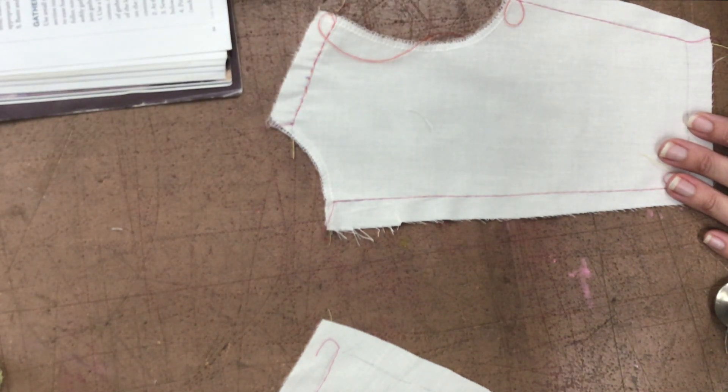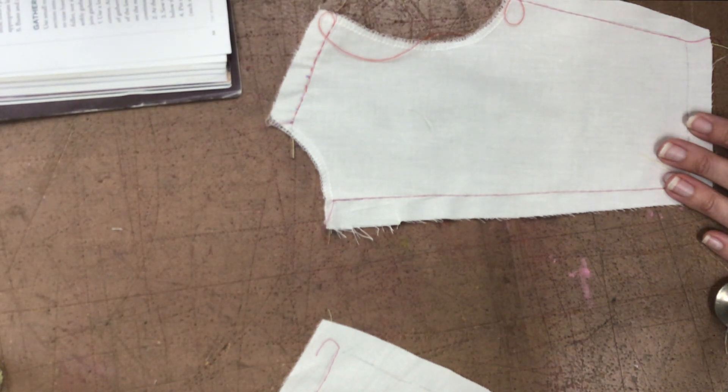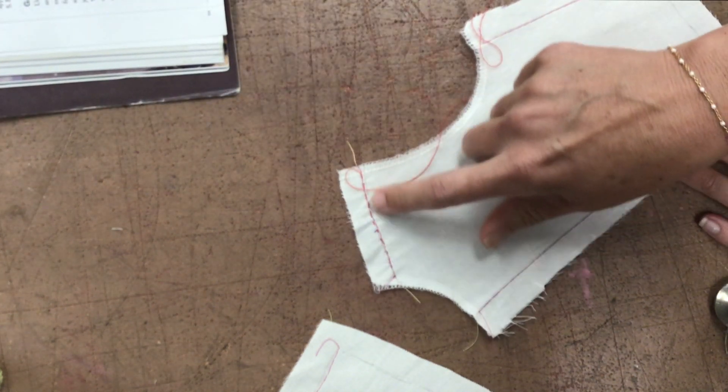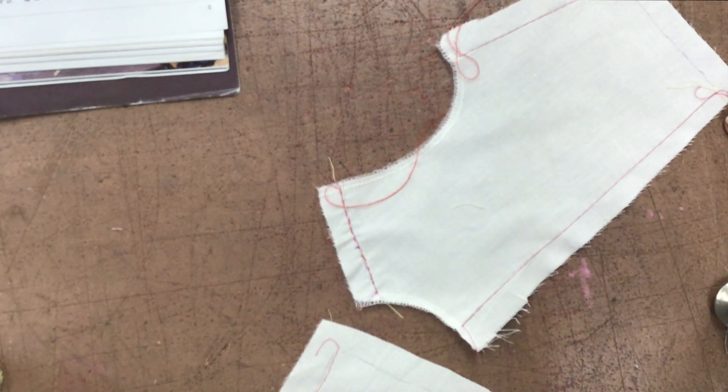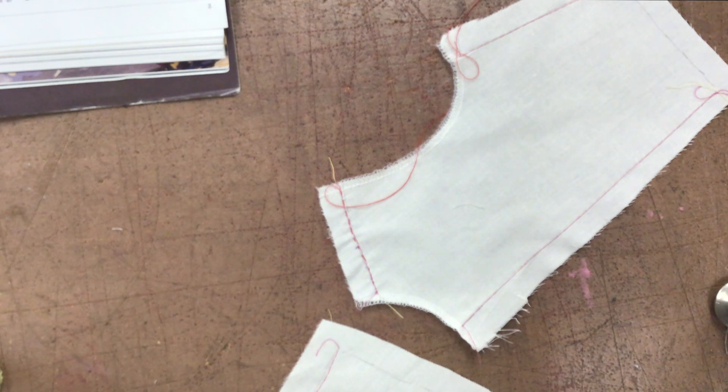Number two. Add two more rows of identical basting. One eighth inch, one above, and one eighth inch below the first line of stitches. So I have my first line of stitches. They want me to go an eighth below, an eighth inch above, exact same thing. Should I switch color thread, do you think?